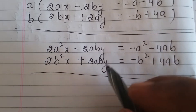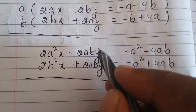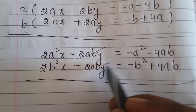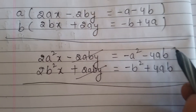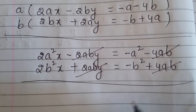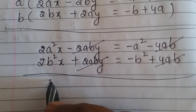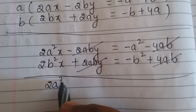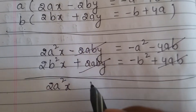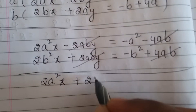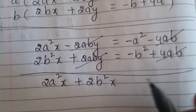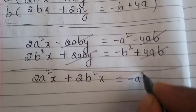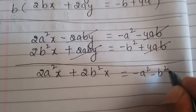Now see any cancellations we can do. Minus 2aby plus 2aby — both get cancelled. Minus 4ab plus 4ab — both going to cancel. Remaining is 2a²x plus 2b²x equal to minus a² minus b².